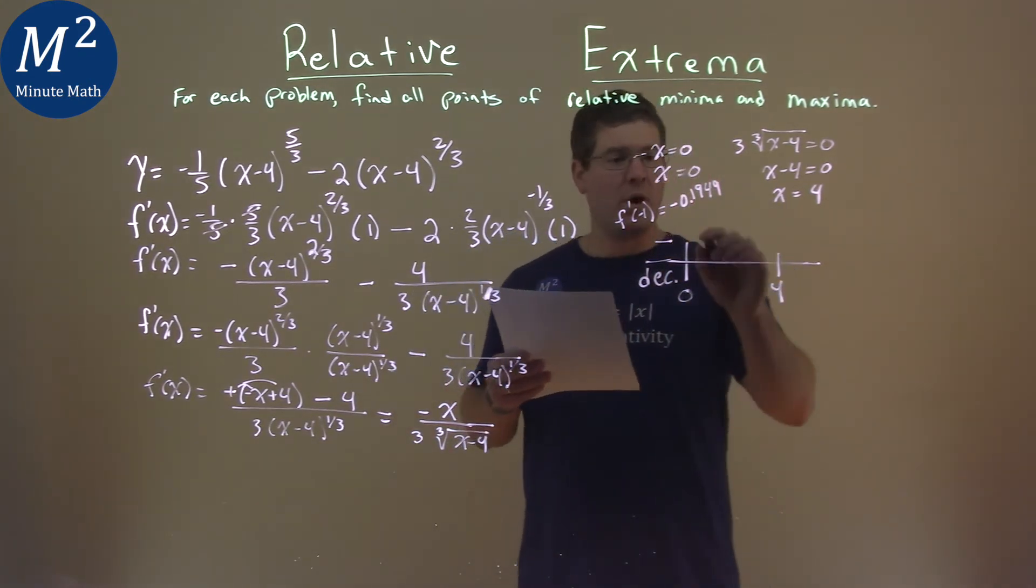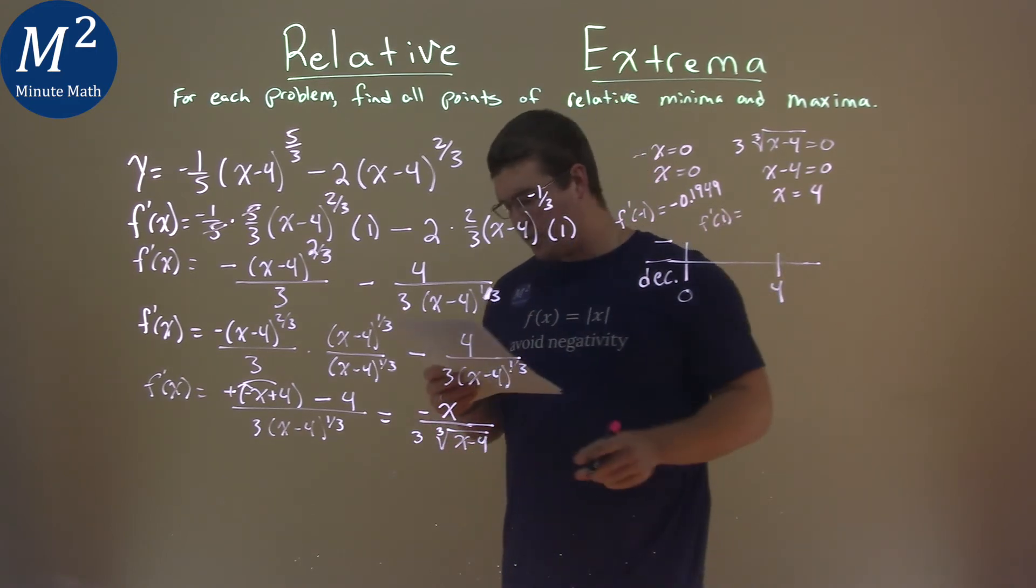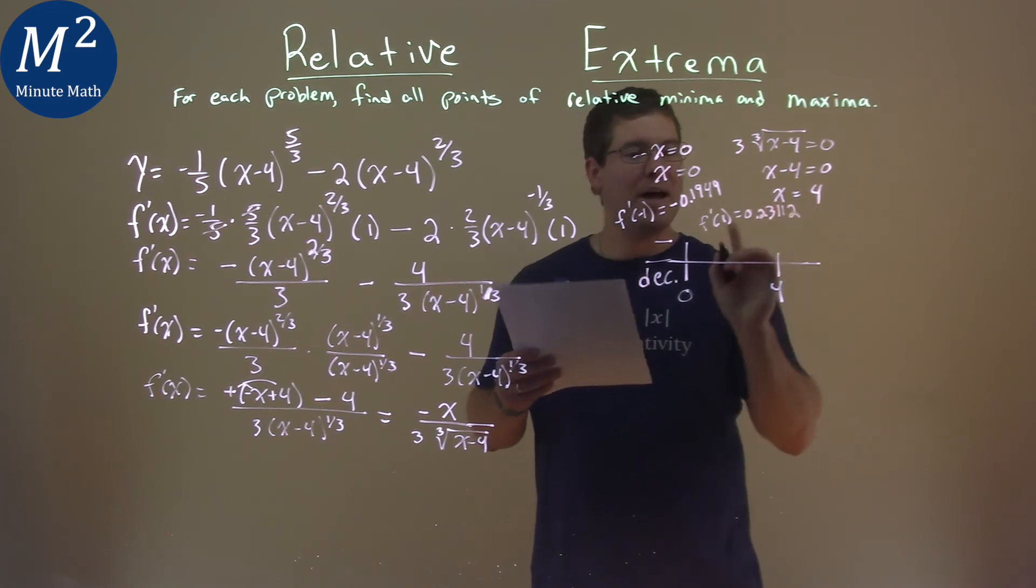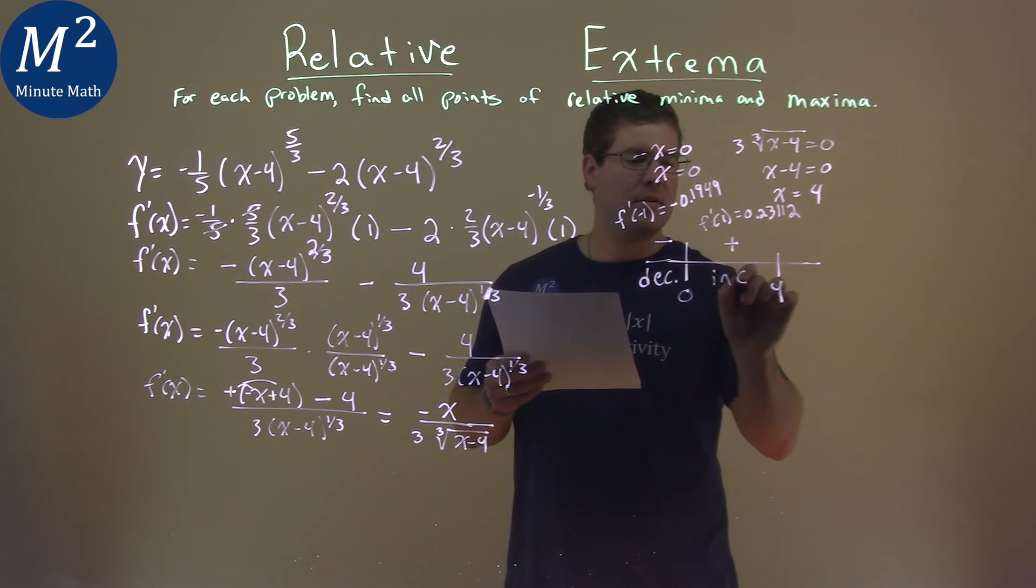From zero to four, I picked one as my value, f prime of one, plugged one into my derivative, and I got 0.23112. I just care that it's positive, and so we're increasing on that interval.